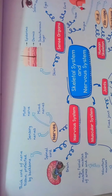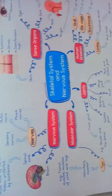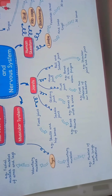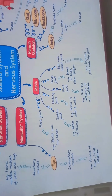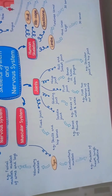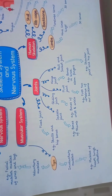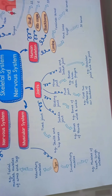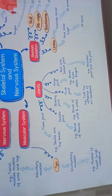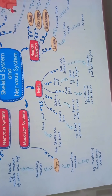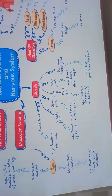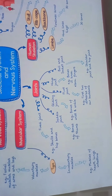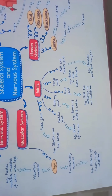Now let's go to the Muscular System. The types of Muscular System include Involuntary Muscles. Examples of Involuntary Muscles are the muscles of the Heart, Lungs, and Intestine. In Involuntary Muscles, you cannot control them voluntarily.